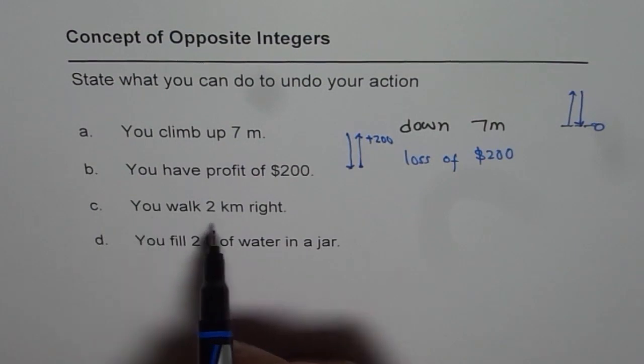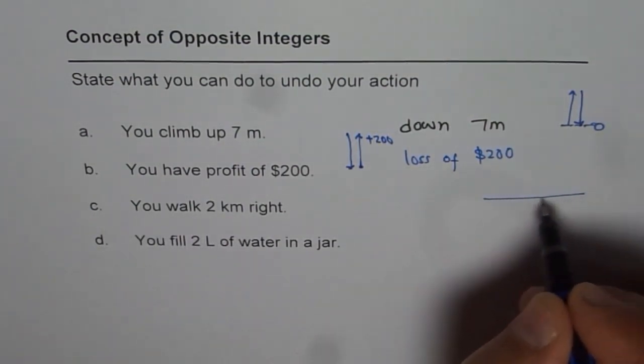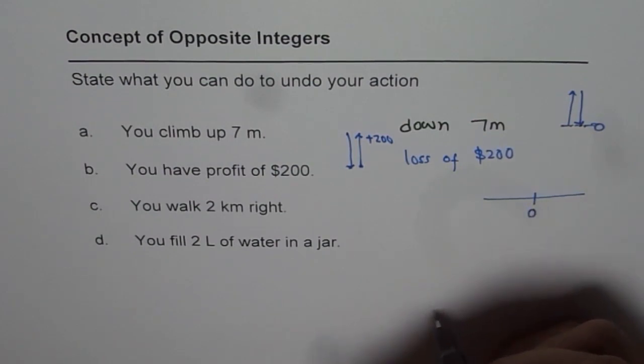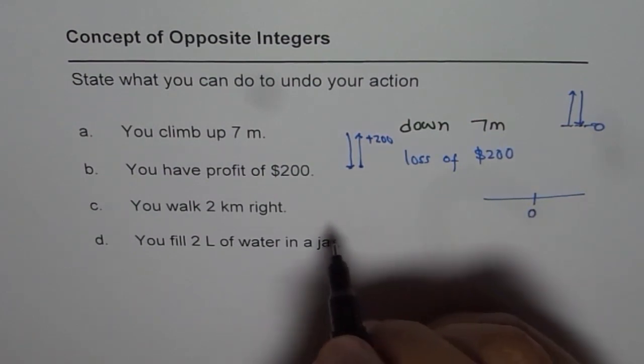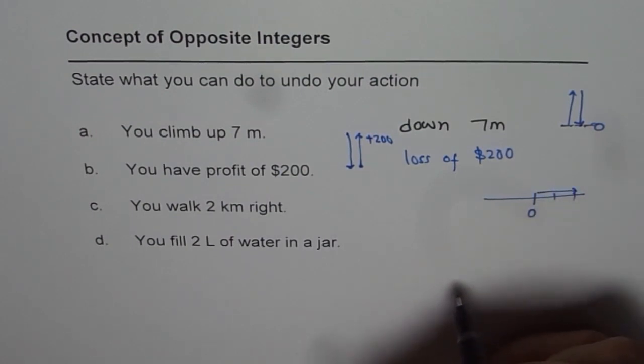Now in this case, you walk 2 kilometers right. That means if you start from here, let's say this is your starting point at 0, the initial point. You walk right 2 kilometers, that much you walk.